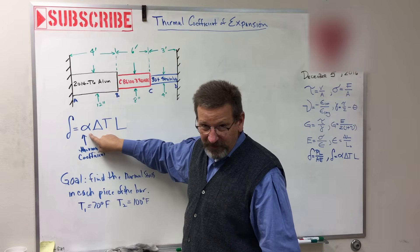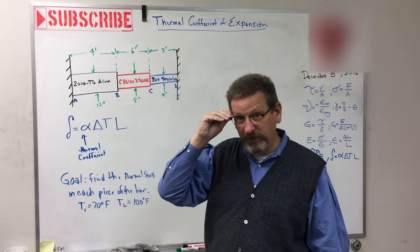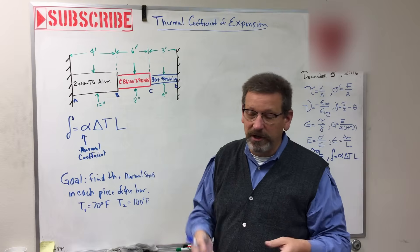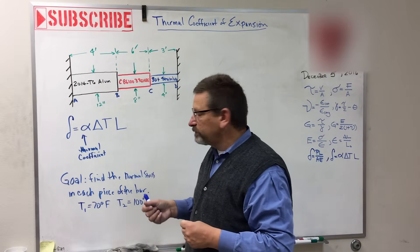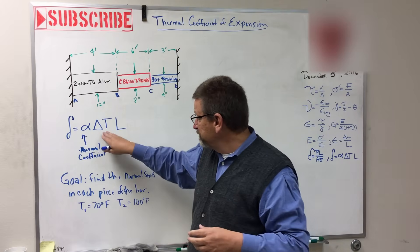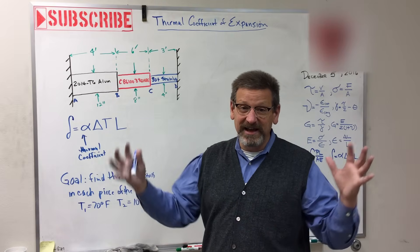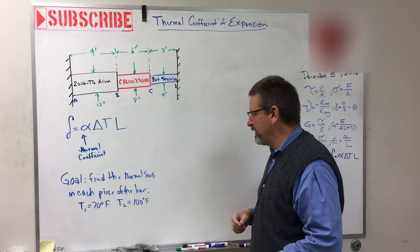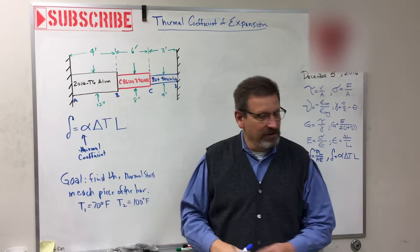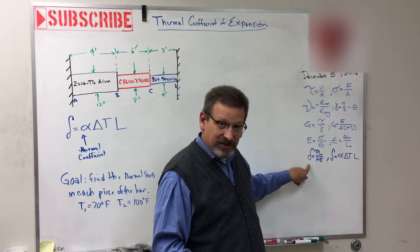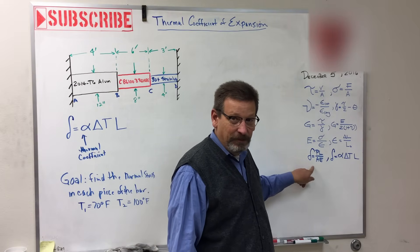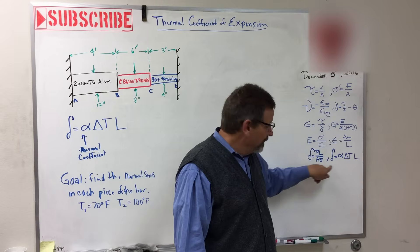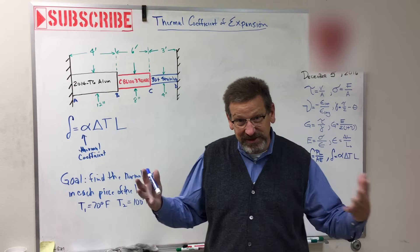So this is a look-em-up value. Every material has a known value. You can look that up in the table in the back of your book. Delta T is simply the change in the temperature. If it gets hotter, this is going to be positive. If it gets colder, it's going to be negative, because it's going to shrink. And then L is the length of the material that I'm interested in.